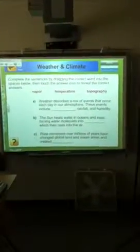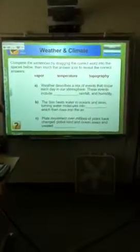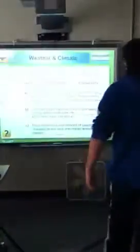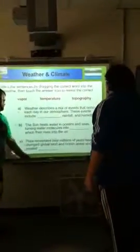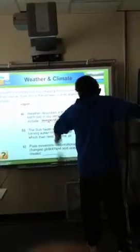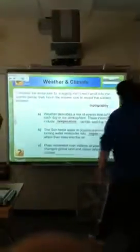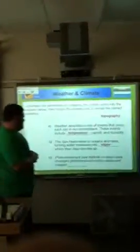About the next one. It says, weather describes a mix of events that occurs each day in our atmosphere. These events include light, rainfall, and humidity. Mr. Cosby, could you come and drag this on the appropriate answer? Which one? Number A. The sun's heat, the sun keeps water in oceans and seas, turning water molecules into a blank, which then rises into the air. Now, there's only three out of them. It's a little bit of a tricky question. Plane movement over millions of years have changed global land and ocean areas. Two more cookies, winner, winner, chicken dinner.